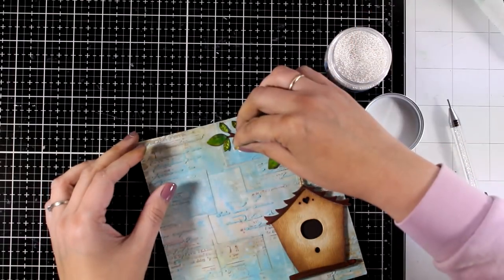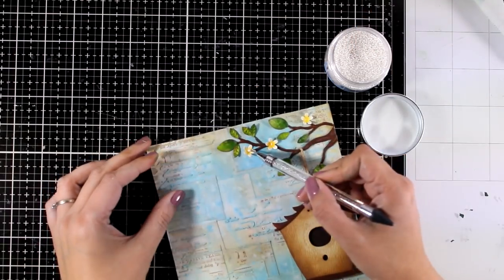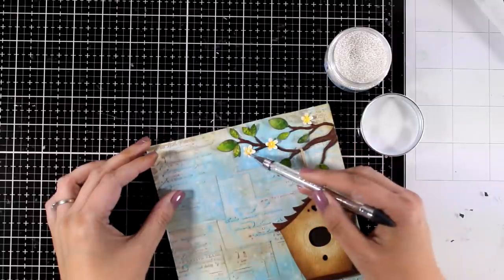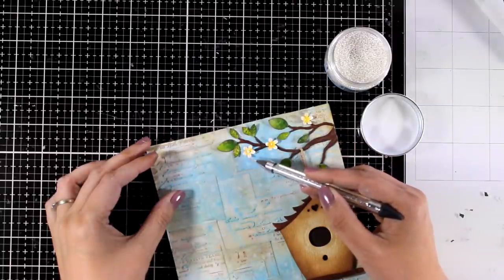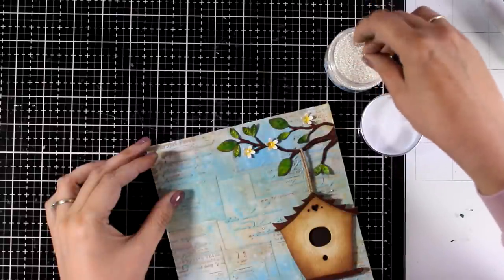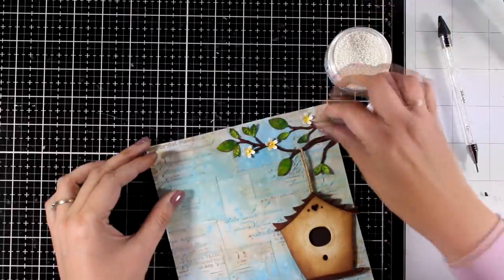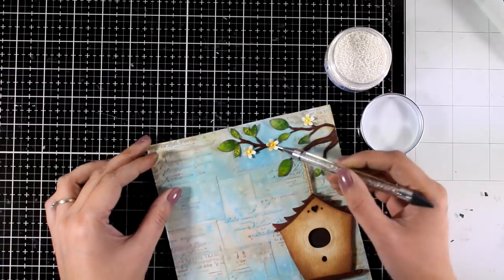When you cut out the flowers you will end up with a tiny little circle that you can use as the center of your flower. However, in this case I'm using those tiny little pearls which I have from Dress My Craft, and I think they are the perfect dimensional center for mini flowers.